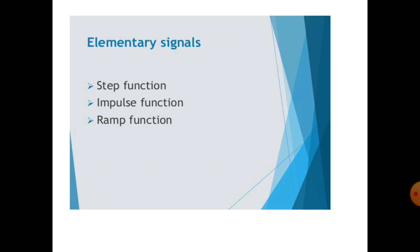A signal carries or conveys information from one place to another. It can be divided into one-dimensional signal and multi-dimensional signal. The basic types of signal are: continuous signal and discrete signal, periodic signal and aperiodic signal, energy and power signal, deterministic and non-deterministic signal, even and odd signal, and bounded and unbounded signal.